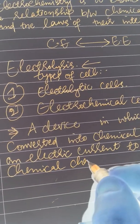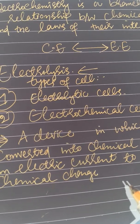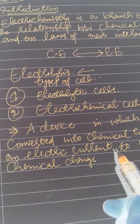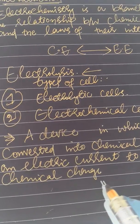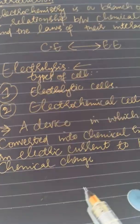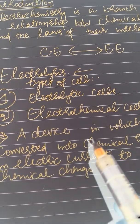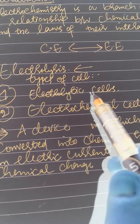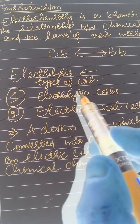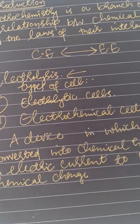This chemical change is called electrolysis. The device is called electrolytic cell, not electrochemical cell. The process is called electrolysis.